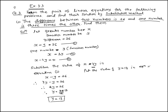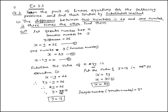Now put the value of y equal to 13 into equation two: x equals 3y. By putting the value, x equals 3 times 13, therefore x equals 39.